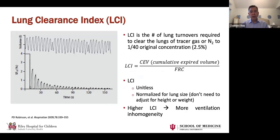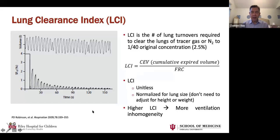In contrast to things like FEV1, you don't really need reference equations or measurements of height or sex. Although there are differences especially in infants and older persons, for the range we're looking at in children, LCI is pretty much constant across that age range. The more breaths you have to take, the more cumulative expired volume, and the higher your LCI will be. So a higher LCI means there's more ventilation inhomogeneity — in contrast to FEV1, a higher LCI shows more lung disease.